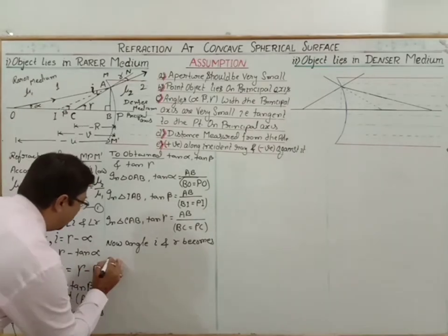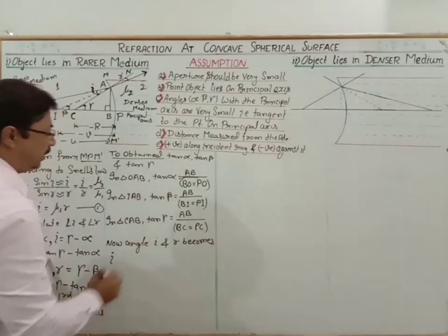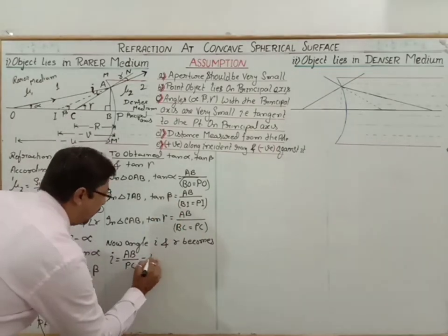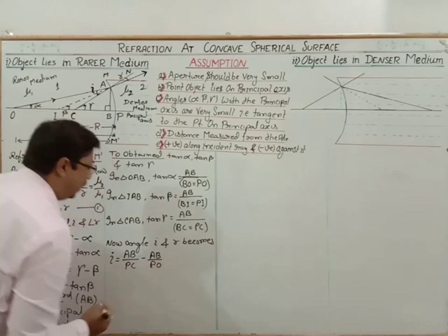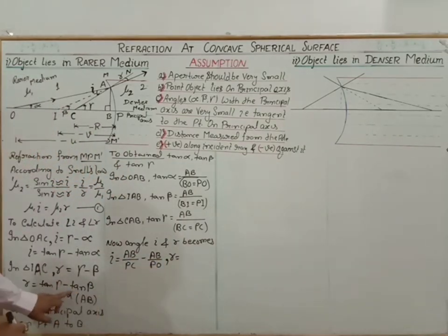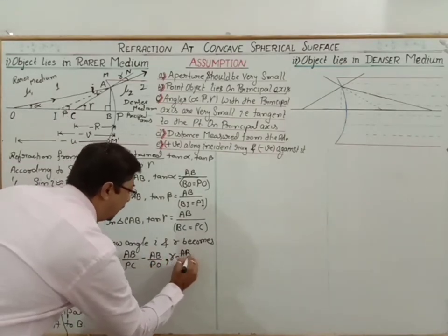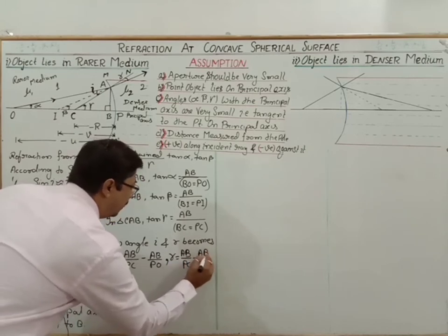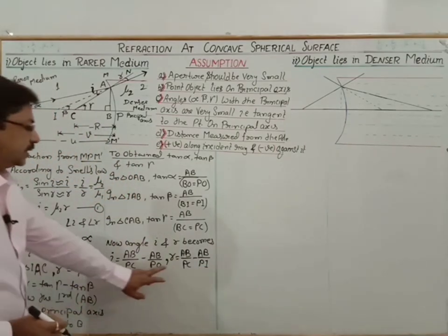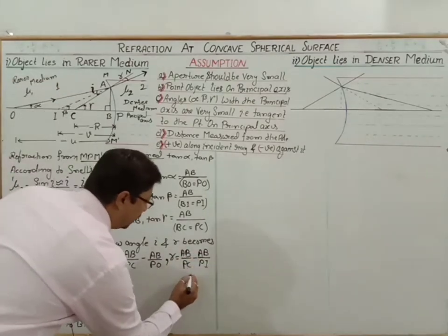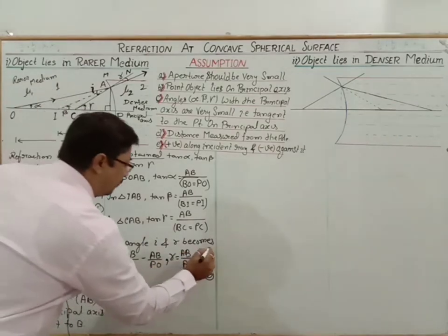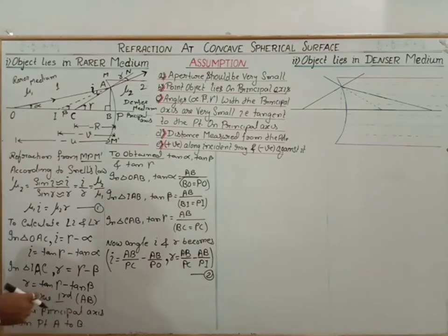Substituting the values: angle i = tan(gamma) − tan(alpha) = AB/PC − AB/PO. Angle r = tan(gamma) − tan(beta) = AB/PC − AB/PI. These are treated as relation 2. Now substituting equation 2 into equation 1: mu1 · (AB/PC − AB/PO) = mu2 · (AB/PC − AB/PI).